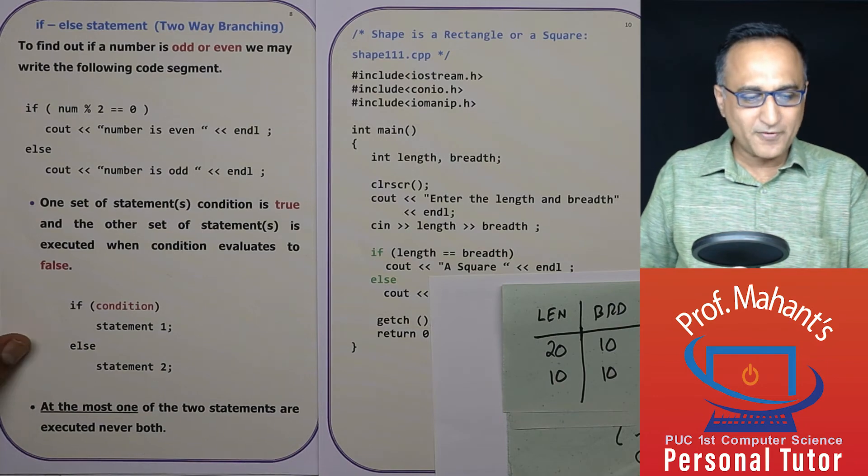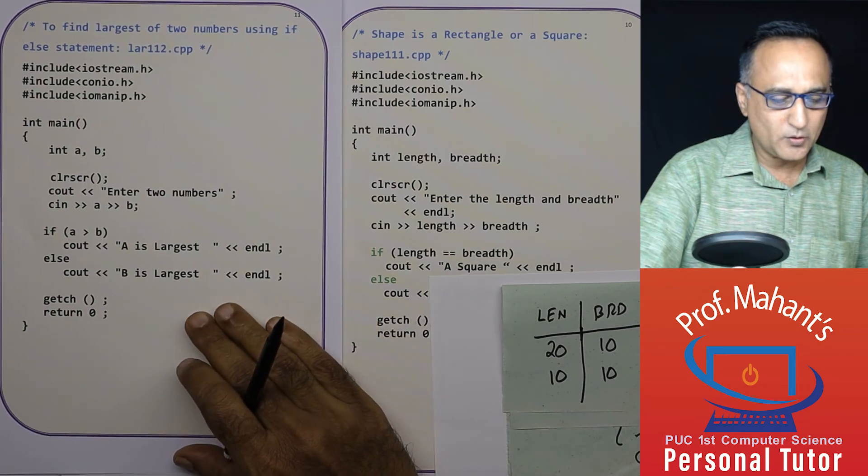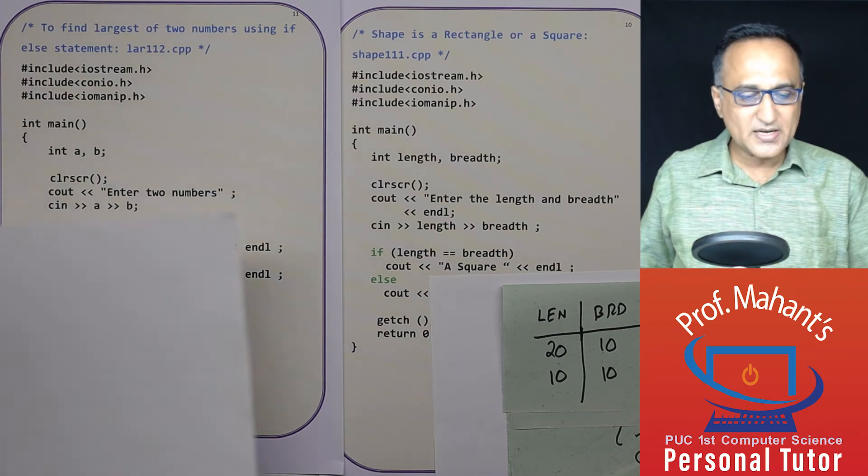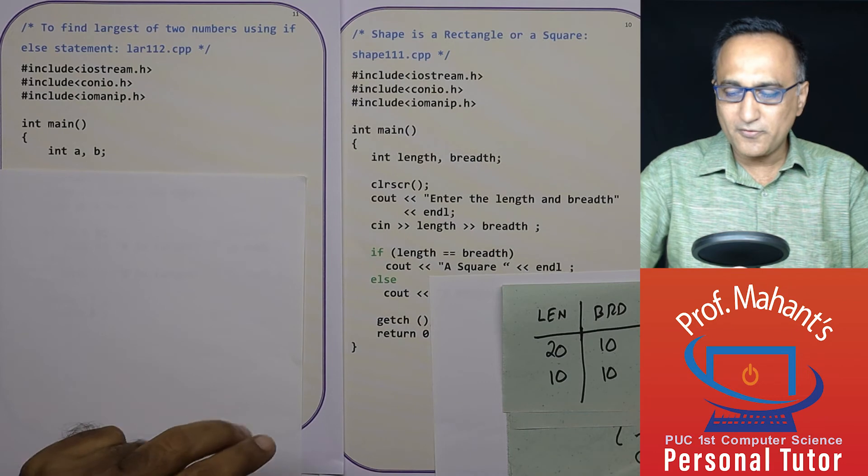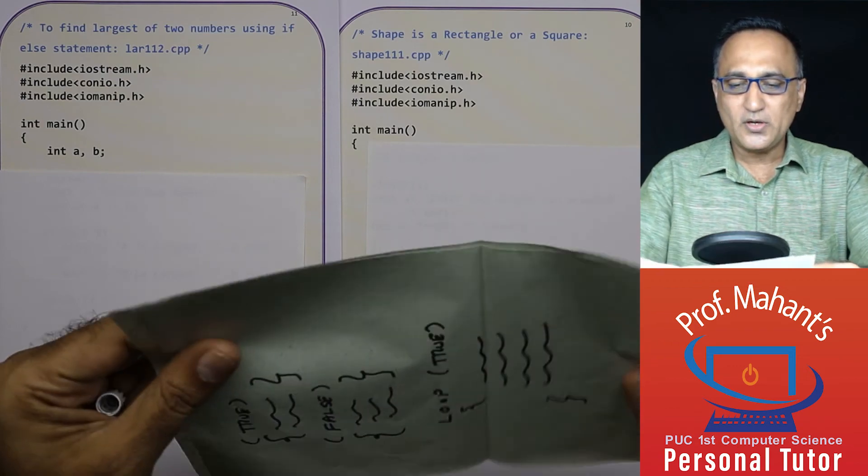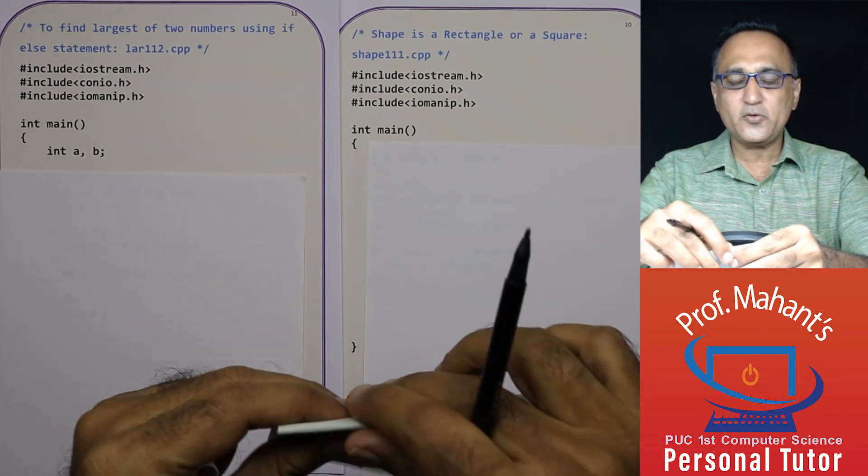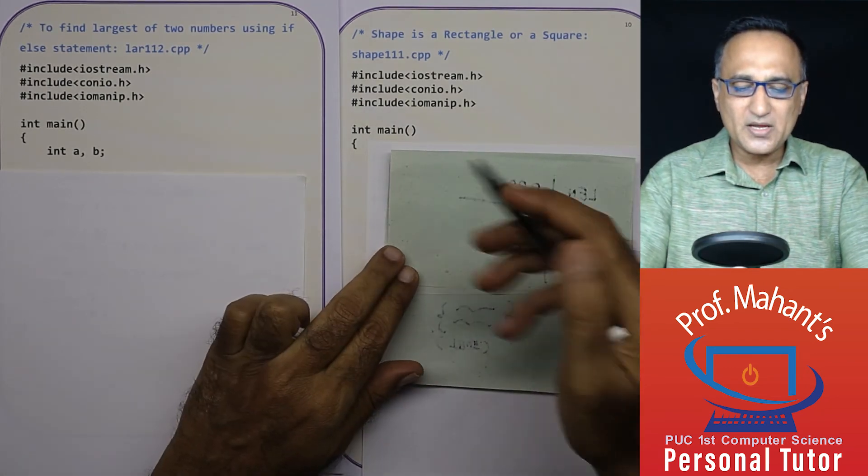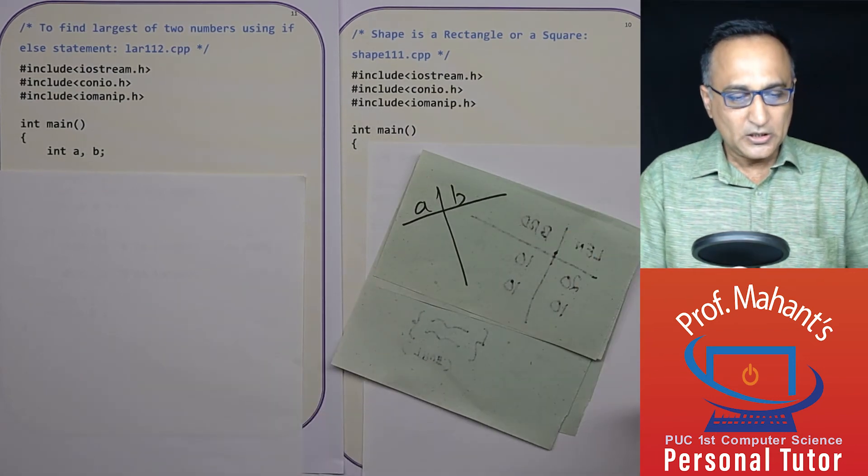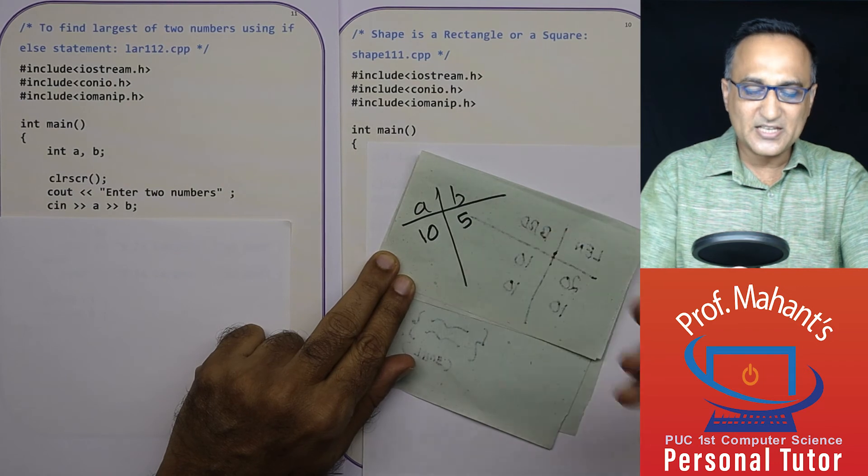Now let's take a program to find the largest of two numbers using the if and else. So do take a look at this because this is going to further reinforce your concepts. In order to find the largest of two numbers, I can simply use the if and else. So what am I doing here? I have two variables, let's call them a and b. Now I'm asking the user to enter the value of a and b. Let's say I enter 10 and I enter this as 5.